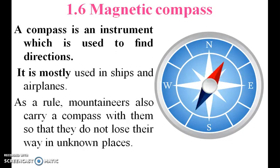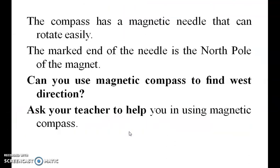A compass is an instrument used to find direction. It is mostly used in ships and aeroplanes. Mountaineers also carry a compass. The compass has a magnetic needle that can rotate easily. The marked end of the needle is the north pole of the magnet.